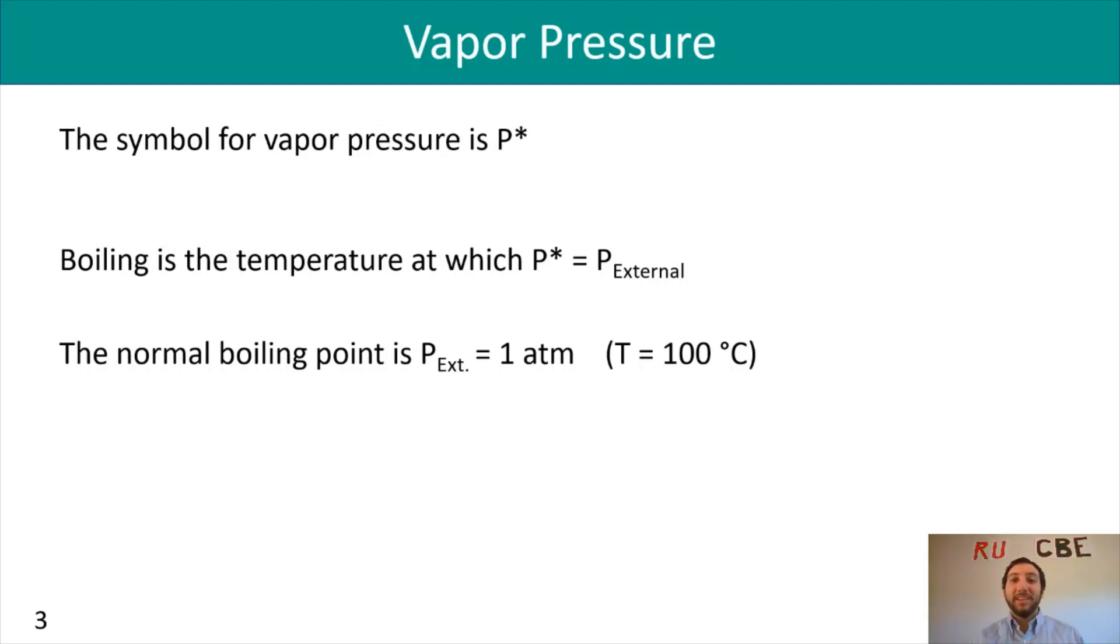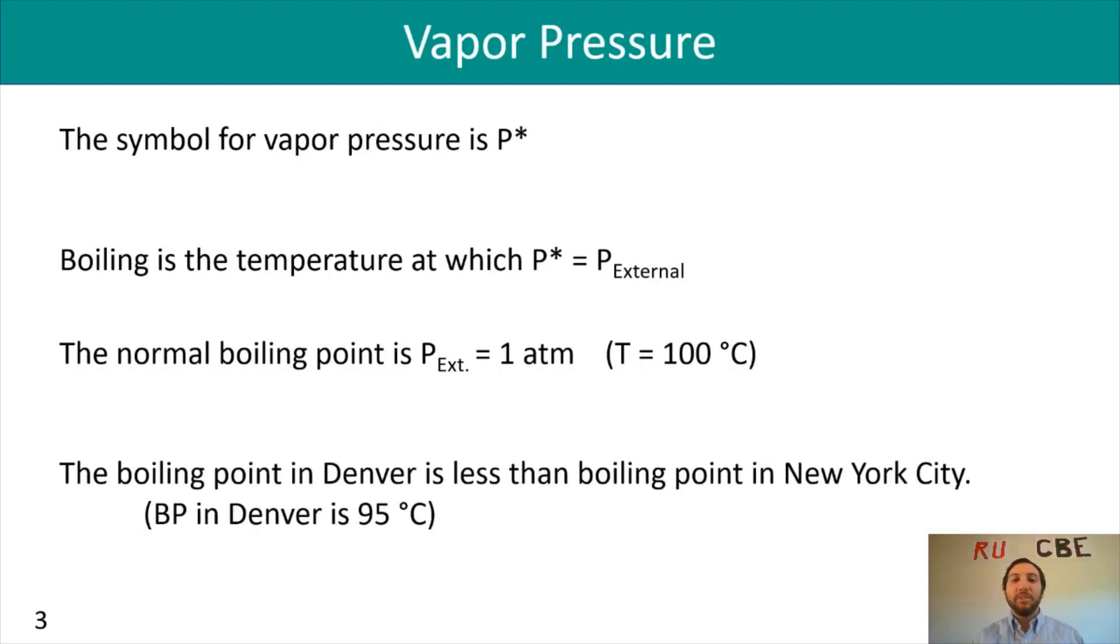The cool thing is that if you have water in Denver and you try to boil it, it is not the same. It's actually going to be a little bit less because Denver is about a mile high above sea level, and because of that, the boiling point in Denver is about 95 degrees Celsius.